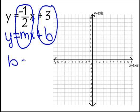So what we have to do first is graph the y-intercept. And in this case, it's 3. The y-intercept means where it crosses the y-axis. So I'm going to put a really good dot here at 3.